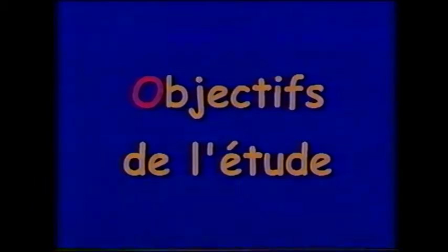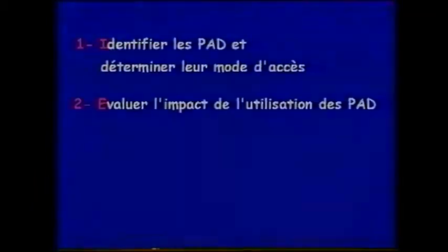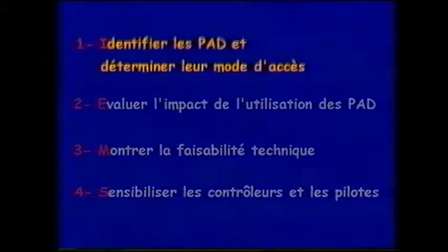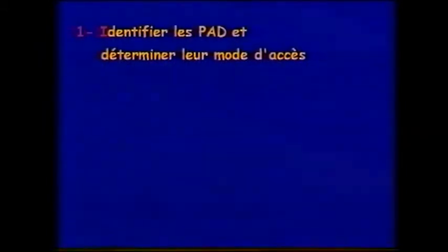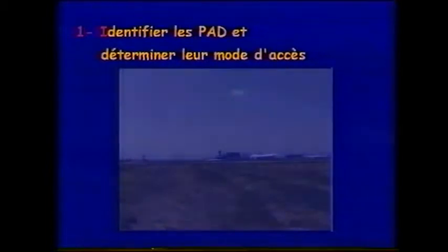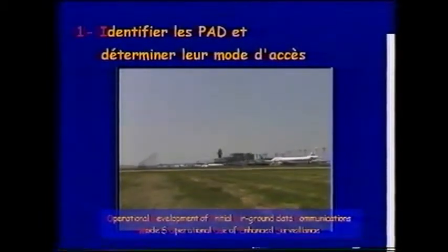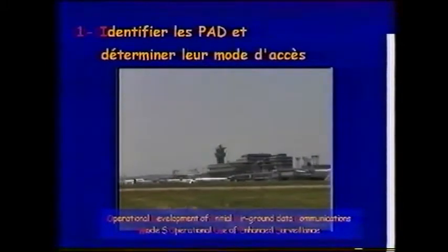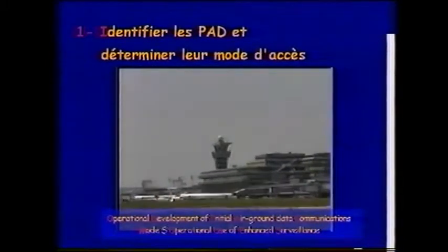Le projet ESCAPAD vise plusieurs objectifs. Il s'agit d'abord d'identifier une liste des paramètres avion utiles aux contrôleurs radar travaillant en zone d'approche, et de déterminer les modes d'accès et de présentation de ces paramètres sur les écrans radar. Une étude préalable, issue du travail des groupes Eurocontrol Kodiak et Mausis, a été menée avec les contrôleurs de Paris-Orly.